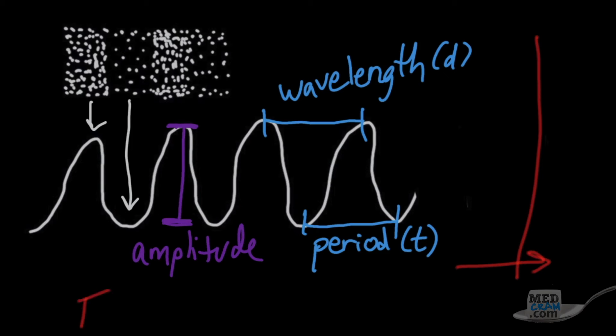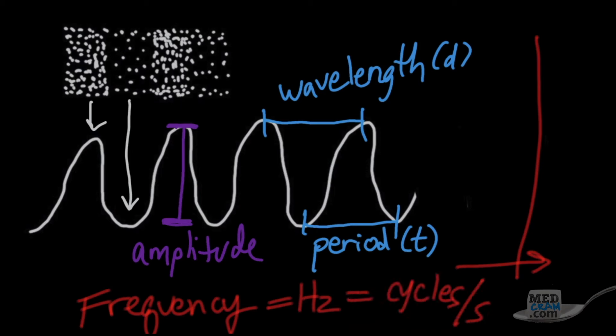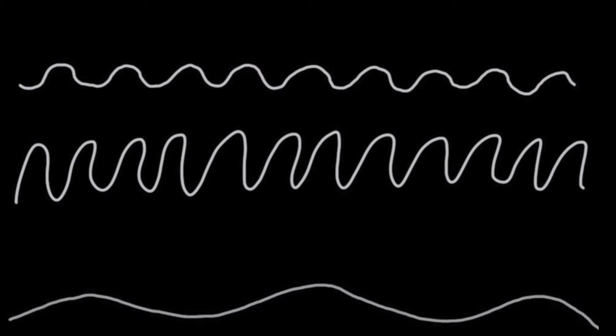And then lastly, we'll look at frequency. Frequency is how many sound waves travel past a certain point in a certain period of time. Frequency is measured in Hertz, and Hertz are cycles per second. So the more waves that pass a given point in a second, the higher the frequency. The less sound waves that pass a given point in a second, the lower the frequency.